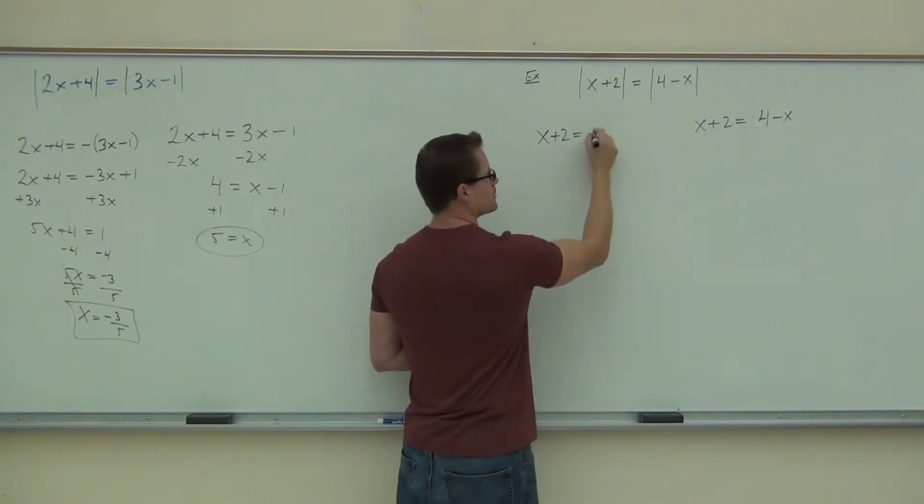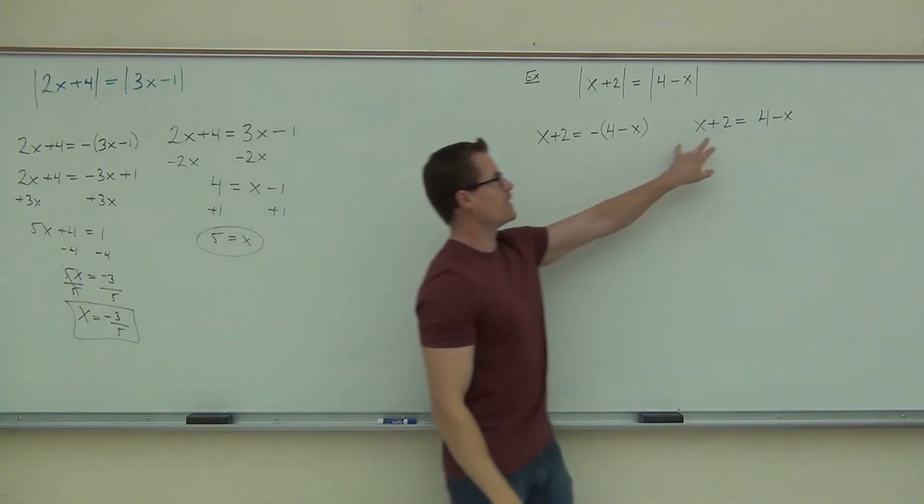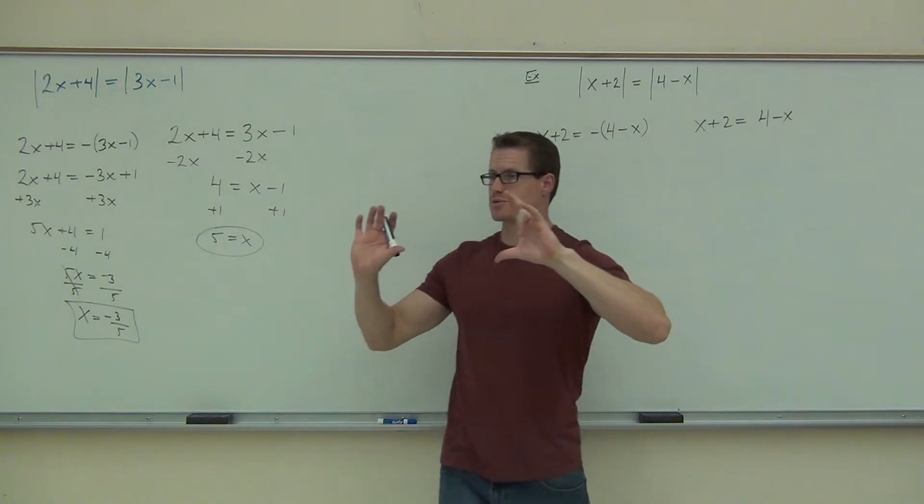Perfect, exactly right. We have one equal to that expression itself. We have one equal to the negative of the inside of the absolute value. We solve both of them.